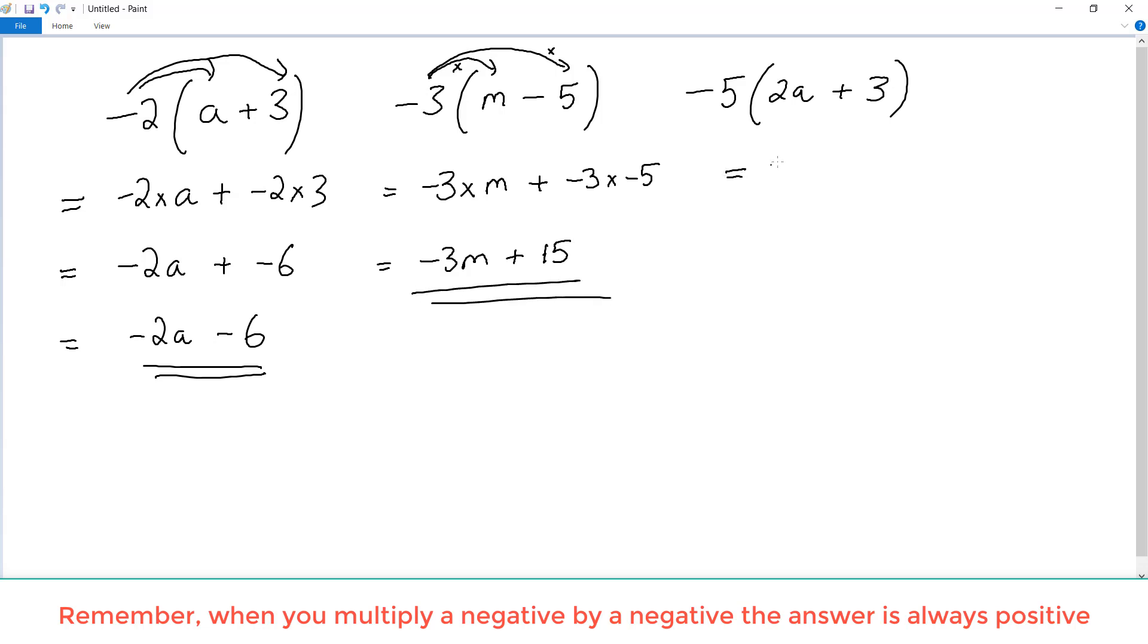Let's try one more. So we're going to multiply the negative 5 in times the 2a, and we've got our plus sign, negative 5 times the 3. Simplifying it down,